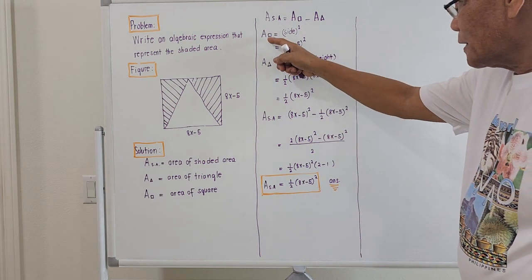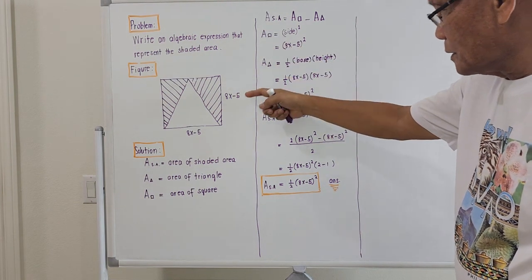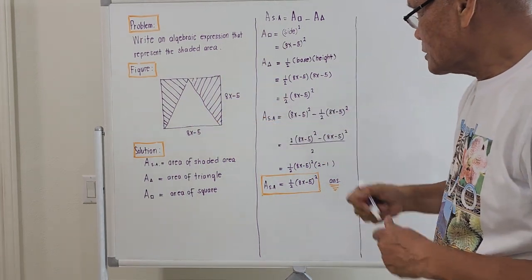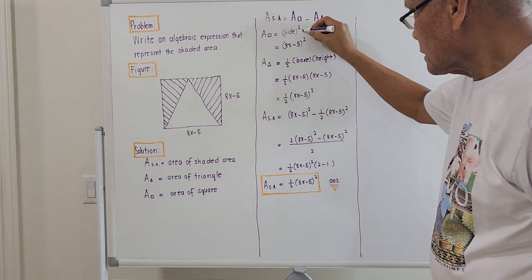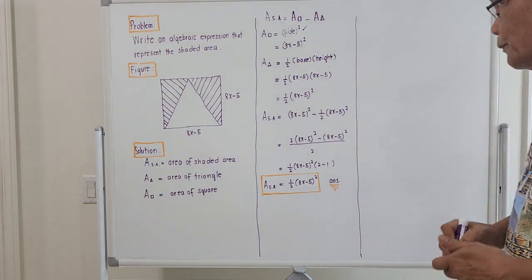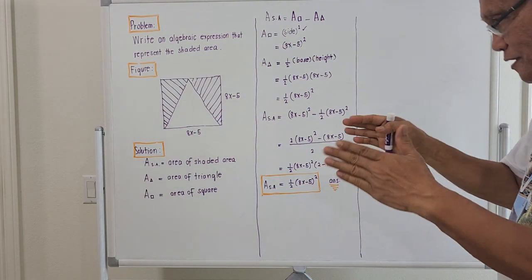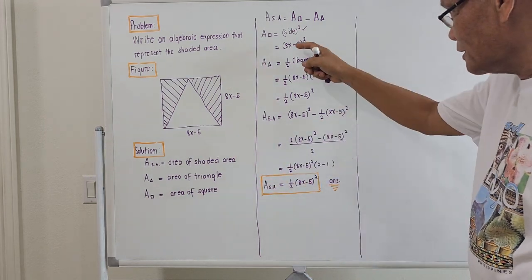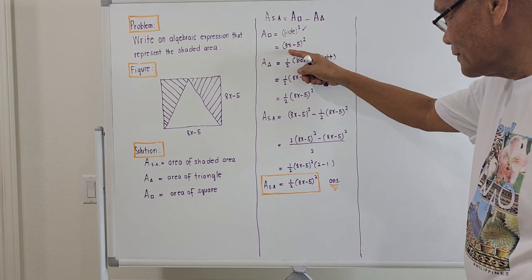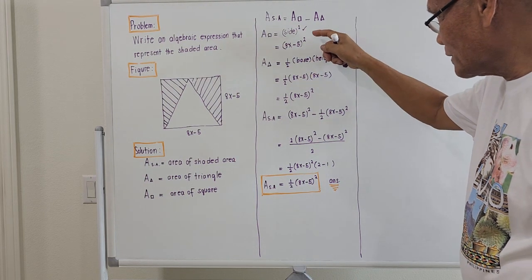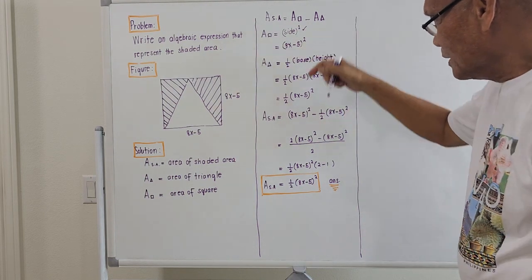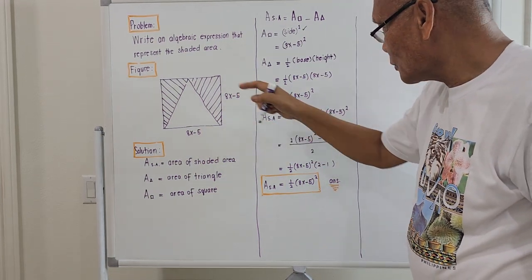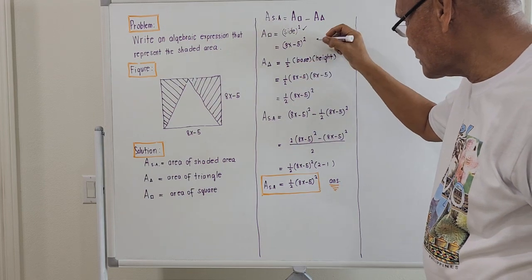If we compute the area of the square, it will be side times side, or in general, side squared. The given side is expressed as the algebraic expression 8x minus 5. Since both sides are 8x minus 5, the area of the square will be (8x − 5) quantity squared.